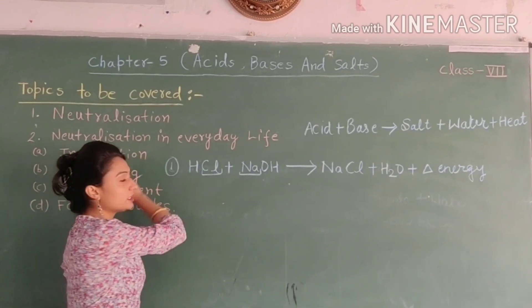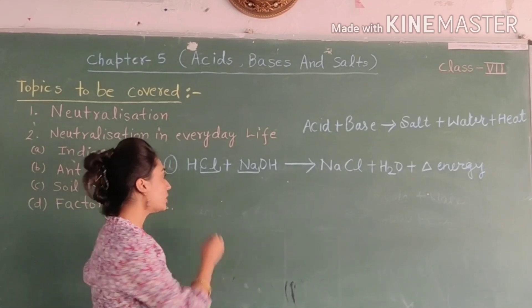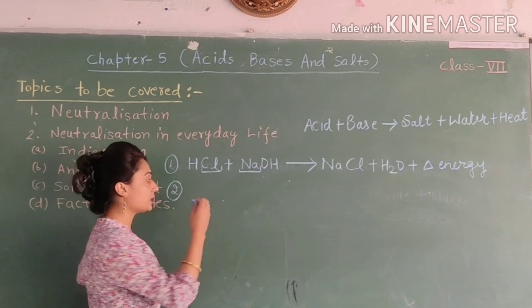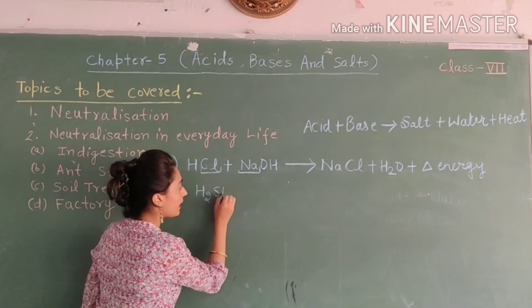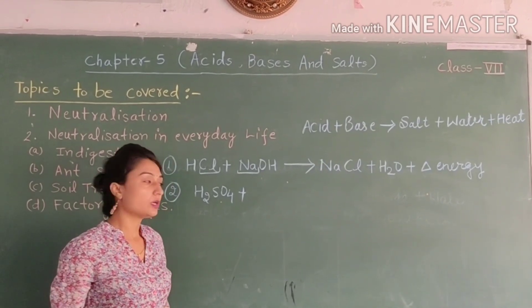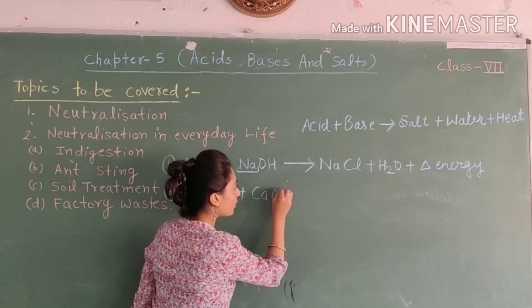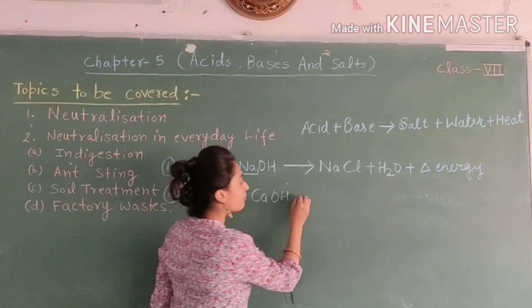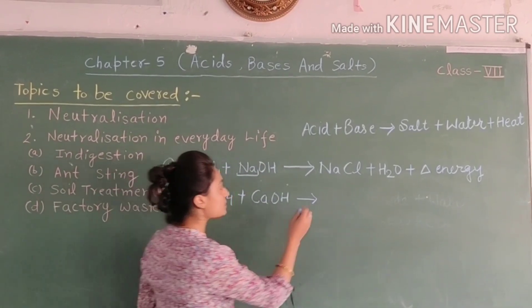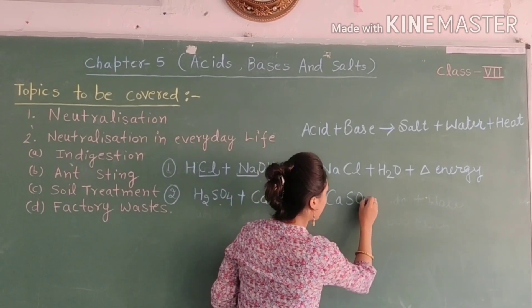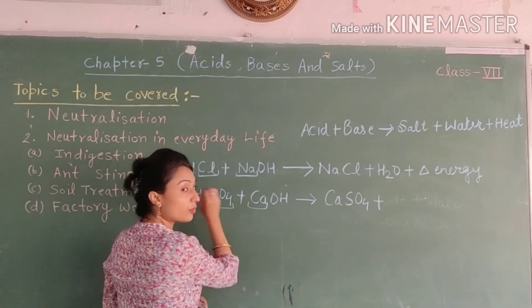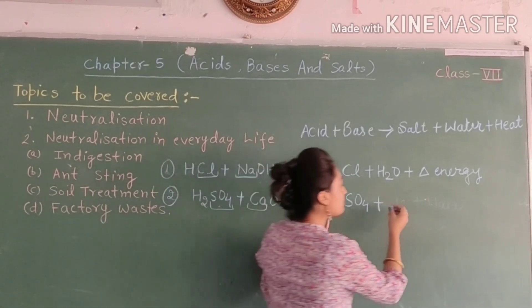This is our first reaction. Let's look at another example. Sulfuric acid (H2SO4) reacts with lime water, which is calcium hydroxide (Ca(OH)2). When this acid and base react, the salt formed is calcium sulphate (CaSO4).